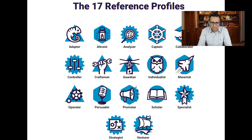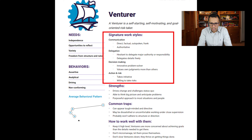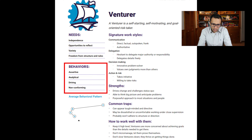Here are the 17 profiles: Adapter, Controller, Operator, and so on. If you go through this PDF, you will find that for each profile it gives you a summary of the needs of that particular individual — such as understanding of the big picture or room for introspection. For each profile there is a big theme; for Venturer, that is: a self-starting, self-motivating, and goal-oriented risk taker. It also covers signature work style — communication style, delegation style, decision-making style, and so on.